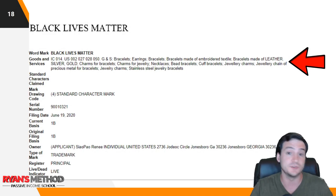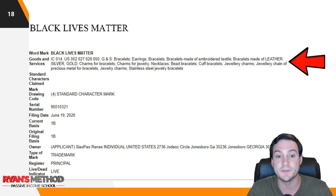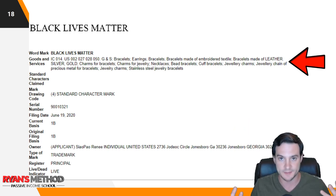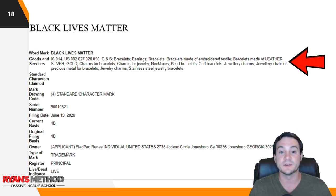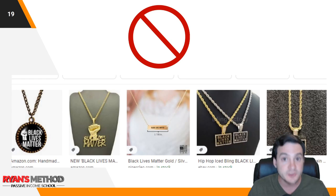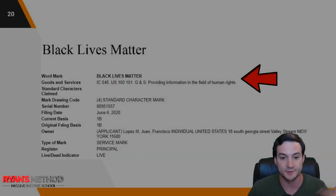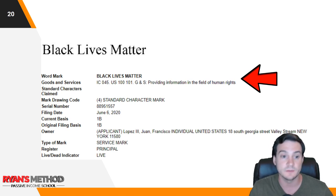I opened up all five records — you can't take shortcuts here. The key area to look at is the 'Goods and Services' section. The first record listed bracelets, earrings, jewelry charms — basically jewelry. Since we're not looking to sell jewelry, we're fine there. The second record said 'providing information in the field of human rights' — that doesn't say t-shirts, so we're good on that one too.